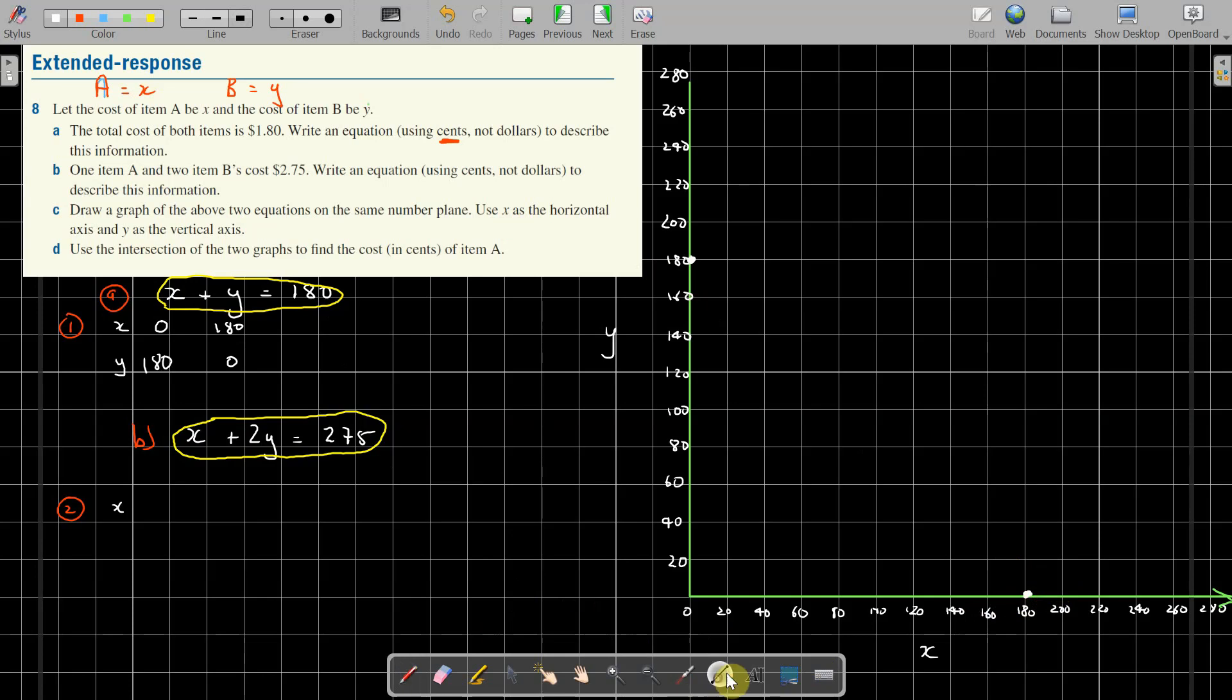That's it, that's all you need. Two points. There we go, a little bit off. There we go, that's our line. We've graphed one of them.